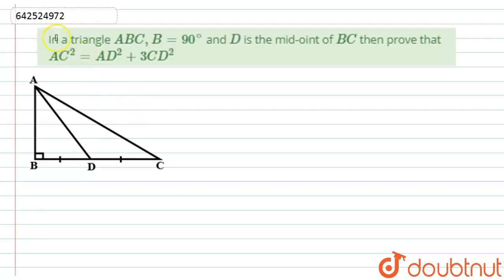Hello student, let's start with the question. Here we have given in triangle ABC, B is 90 degrees and D is the midpoint of BC. Then prove that AC² equals AD² plus CD². So let's start with this solution.